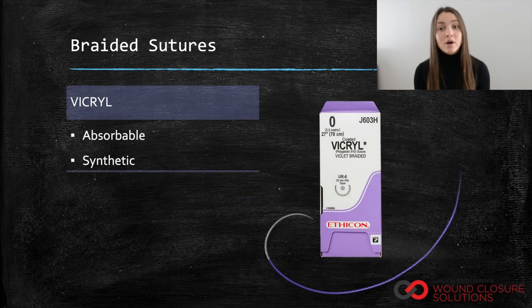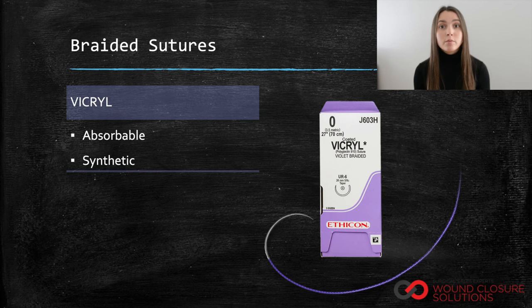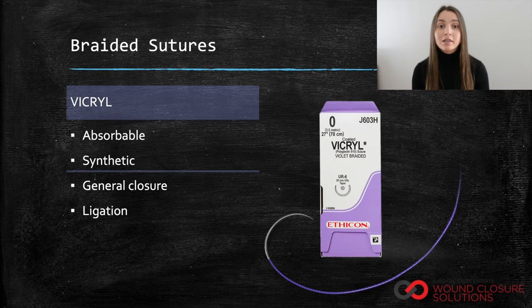Vicryl is one of Ethicon's most popular braided suture options. This braided suture is absorbable and synthetic, and is indicated for general closure, ligation, the bowel, and orthopedic surgery.